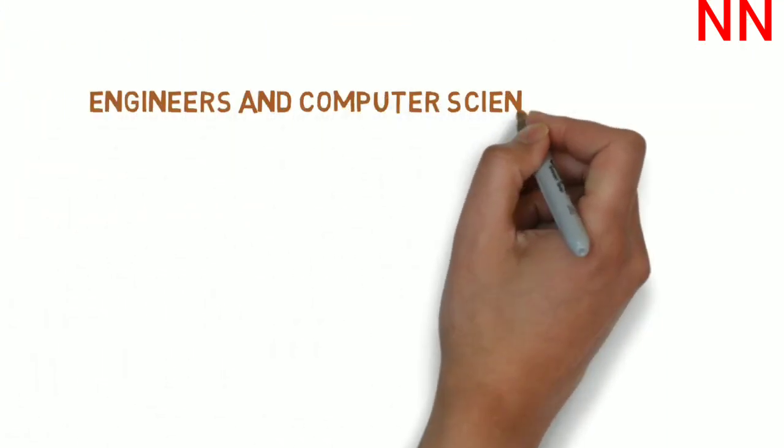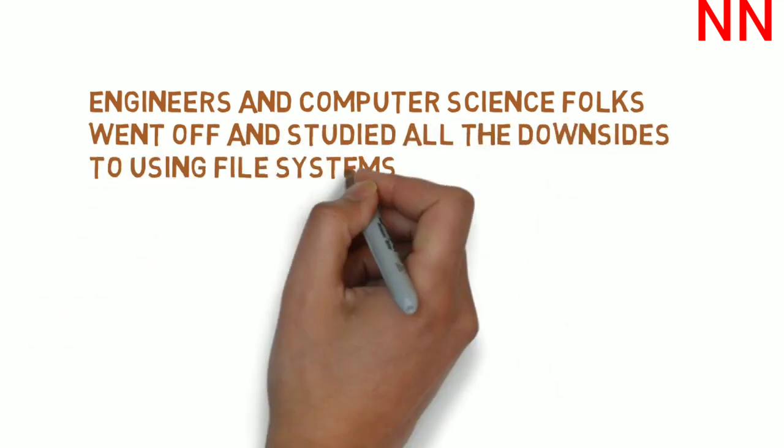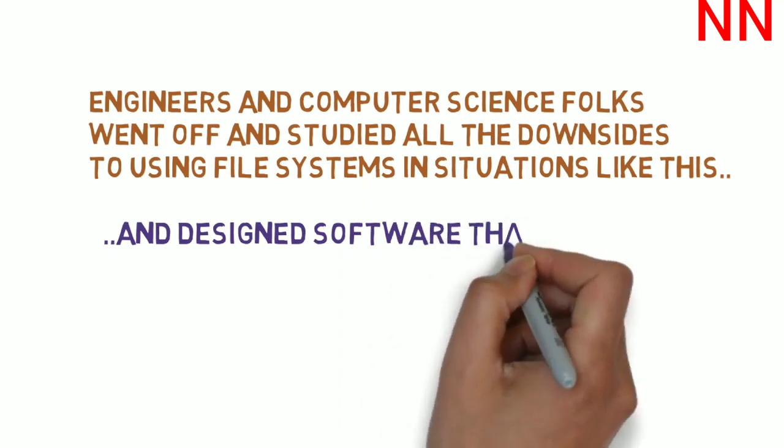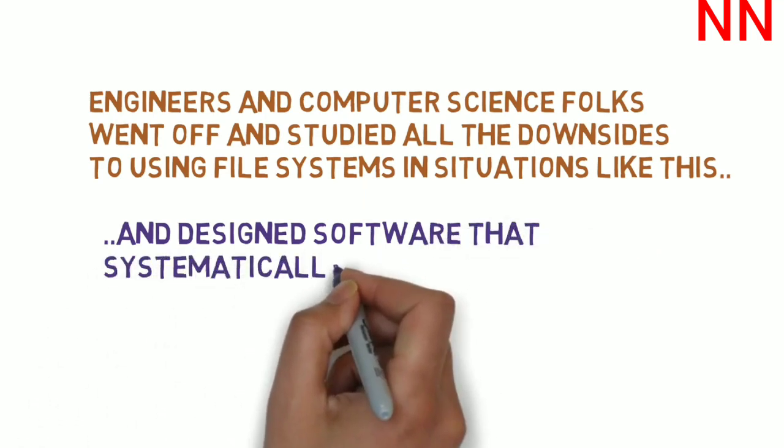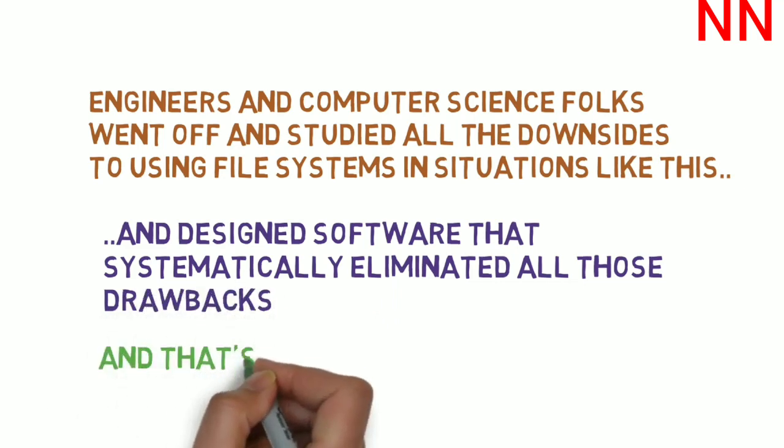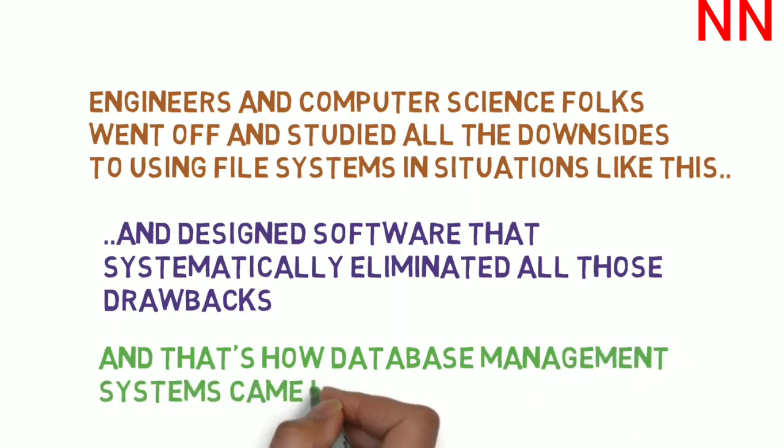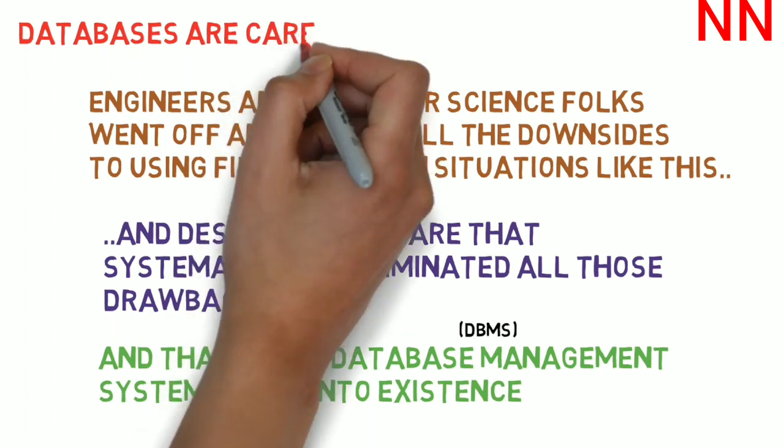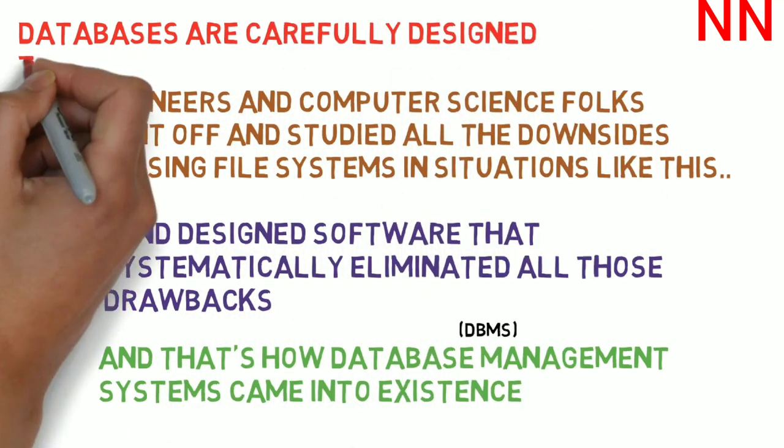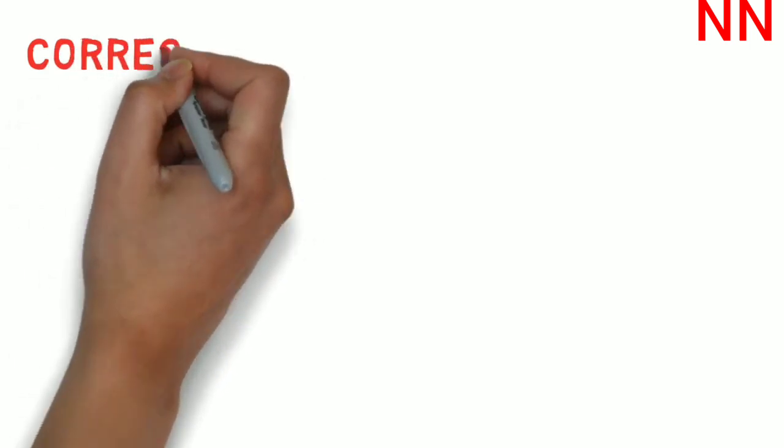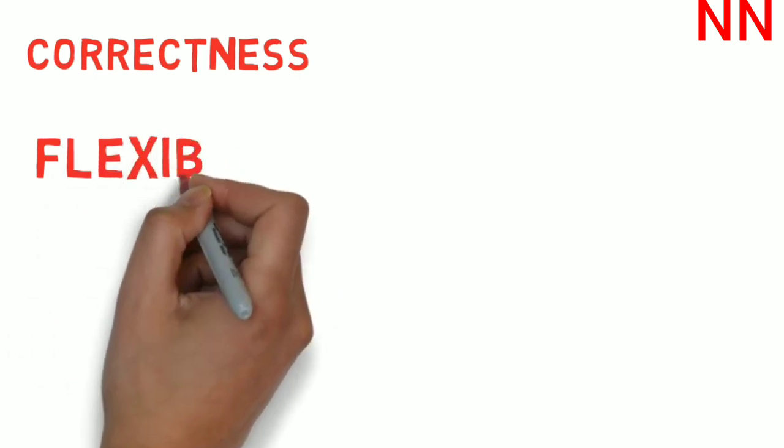So, a lot of engineers were facing the same kind of problems. So, engineers and computer science folks went off and studied all the downsides to using file systems in situations like this, where you needed a lot of stability and you were handling a lot of data. And they designed software that systematically eliminated all the problems that exist with file systems. And that is exactly how database management systems or DBMS as they are called in short, came into existence. Databases were designed specifically so that they could handle a large amount of data. All the problems that are involved in handling all of this data and storing it as well as reading and writing it in a proper manner were considered when databases were designed.